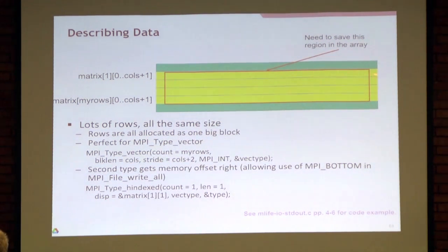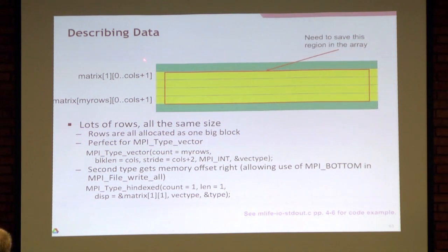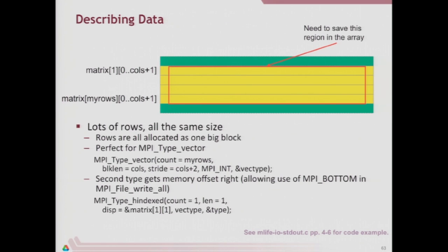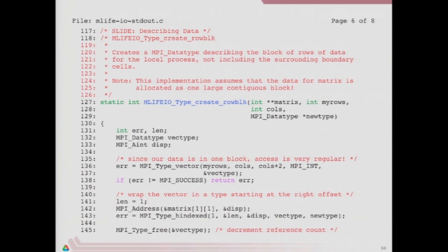We can talk about this as a vector, but if we just pass in our pointer to the matrix, the vector would be in the wrong place. To get the memory offset right, I abused type_h_indexed — saying there's one type with a length of one, and using the displacement of the first element in the matrix to effectively get the offset I want. It's just games we play with MPI types. Here's the type vector; I get the address of that element and create the H-indexed type, then free the vector type because there's still a reference to it.